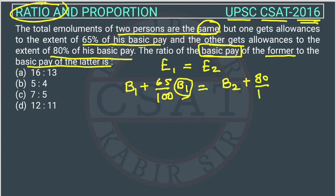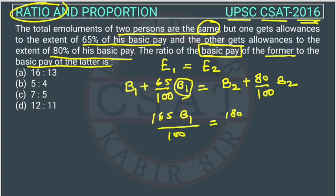Setting the two emoluments equal, we get 165 b1 over 100 equals 180 b2 over 100. The 100s cancel. Bringing b2 to one side and 165 to the other, we get b1 over b2, which is the ratio we need to find. This becomes 180 over 165.